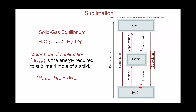The molar heat of a process — whether sublimation, fusion, or vaporization — is the amount of heat needed to transform one mole of the substance during that process. Melting or fusion is accompanied by a change in energy per mole called the molar heat of fusion (ΔH_fusion). Vaporization is accompanied by the molar heat of vaporization. Sublimation, a change from solid directly to gas, is basically the sum of these two processes.